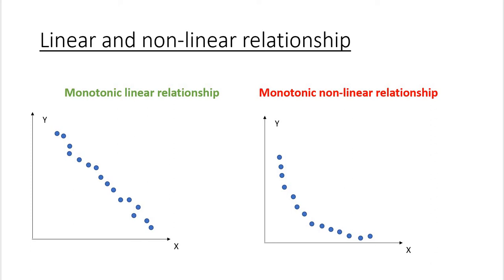Monotonicity of a function means that the function is decreasing all the time or increasing all the time. For instance, on this graph on the left-hand side, you can see that each time the value of x increases, the value of y decreases and vice versa. Also, when x increases by one unit, then y always decreases by n units, where n stands for the slope of this line. So the magnitude of change of y is always the same.